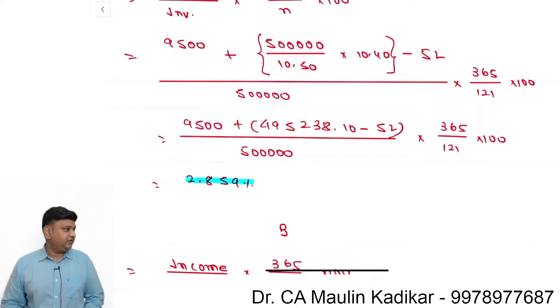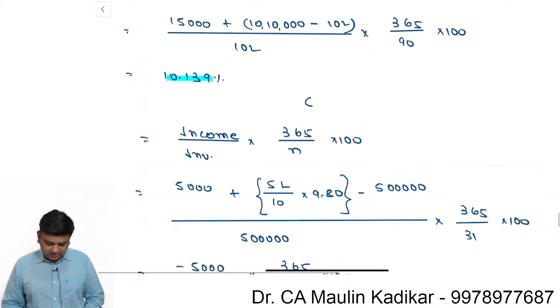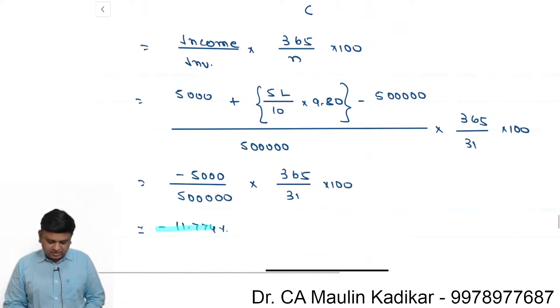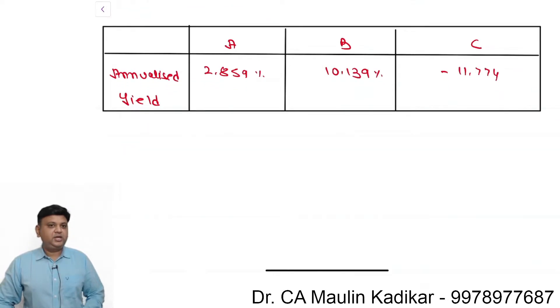Look, A's return is 2.859%, B's return is 10.139%, and C's return is negative. These are the returns that we have. Now for future course of action, we can say: do you have your future projection about the return?